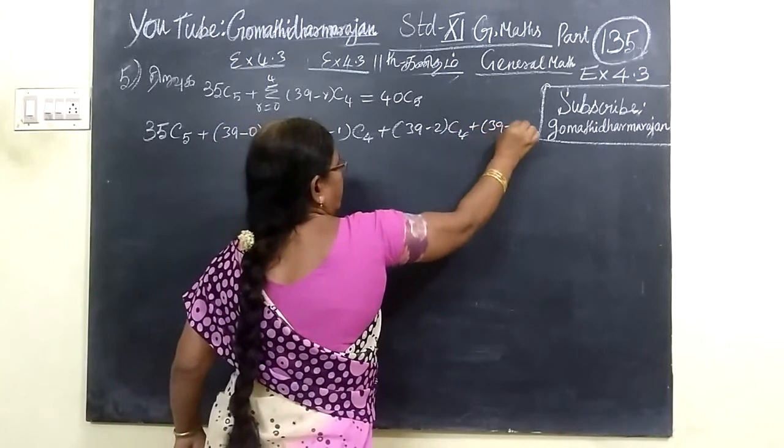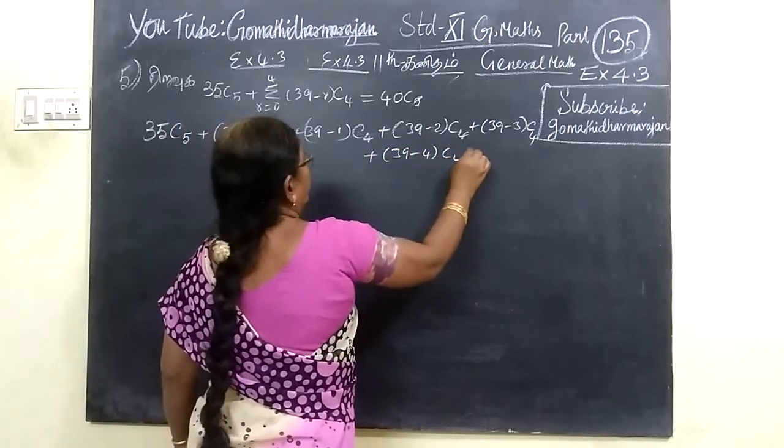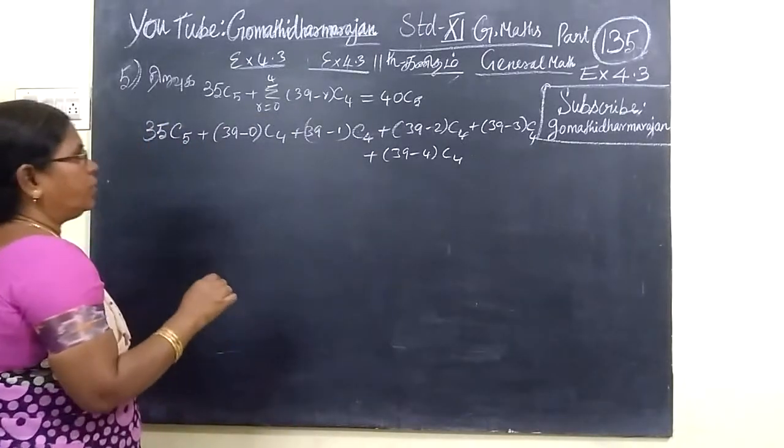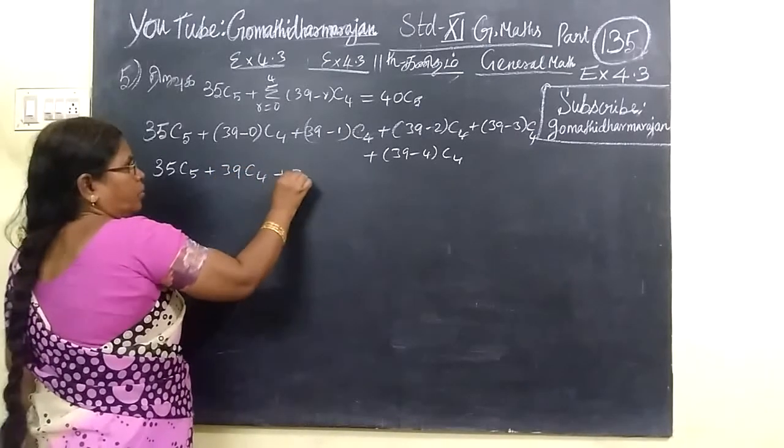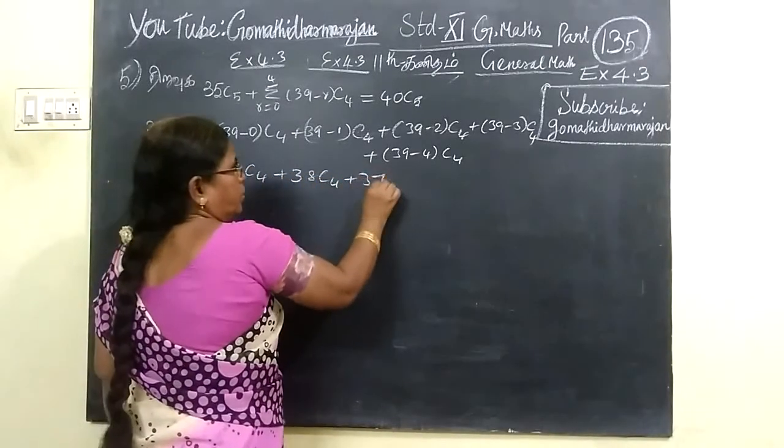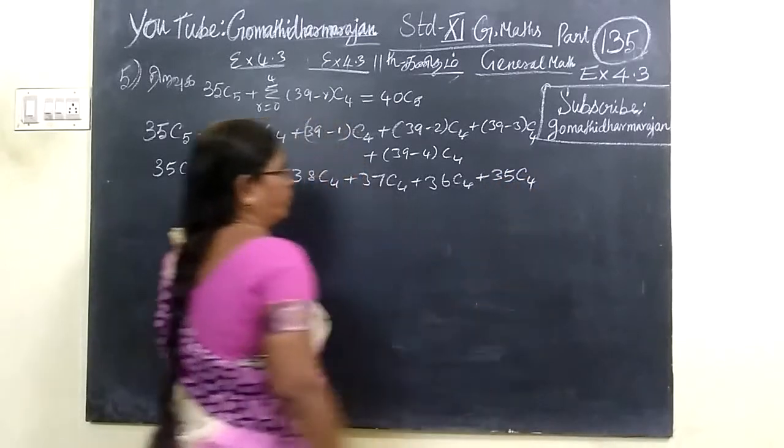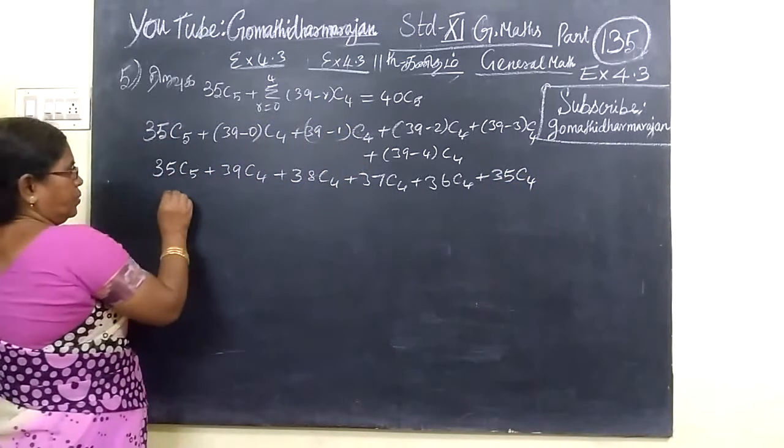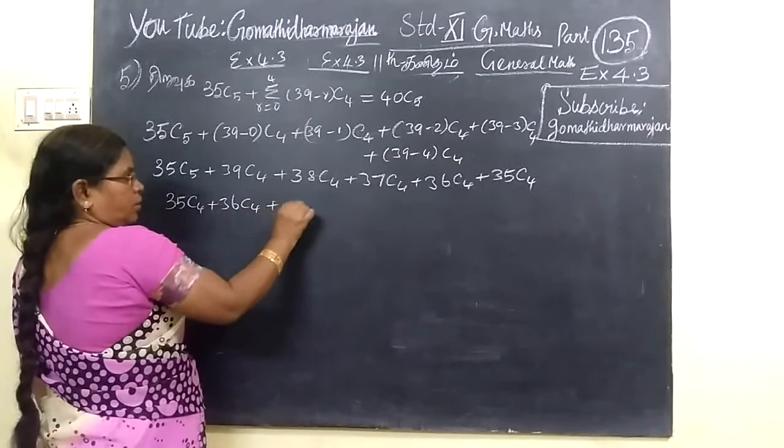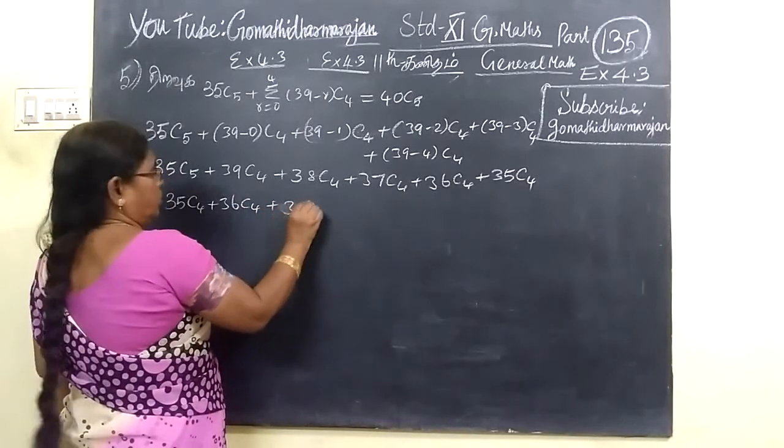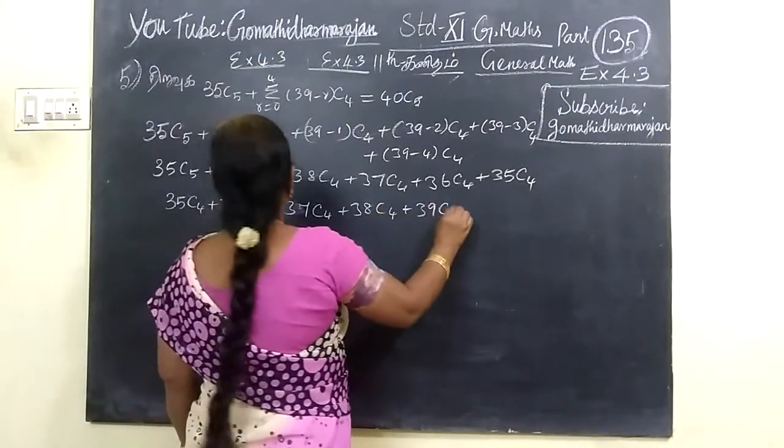Then 39 minus 3 C 4, then 39 minus 4 C 4, then I have covered the norm. So in all terms apply for nature. So, 35 C 5, then 39 C 4, 38 C 4, then 37 C 4, 36 C 4, and 35 C 4. This is a smaller number. So, 35 C 4, 36, then 37, 37 C 4, then 38 C 4, then 39 C 4.